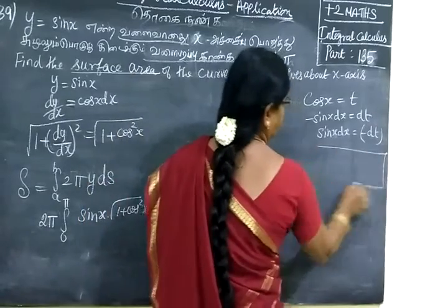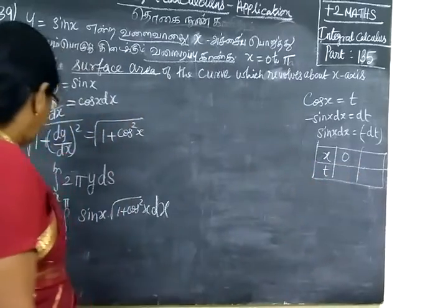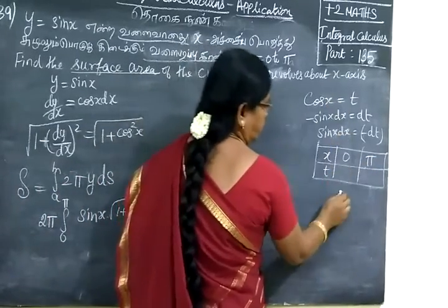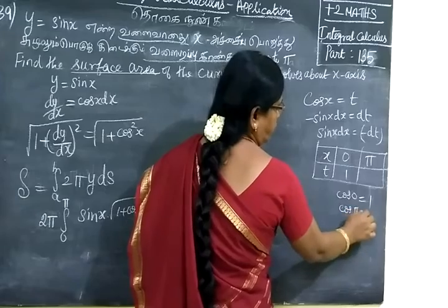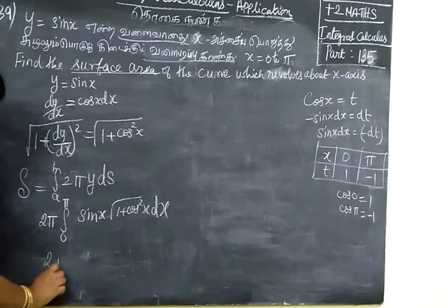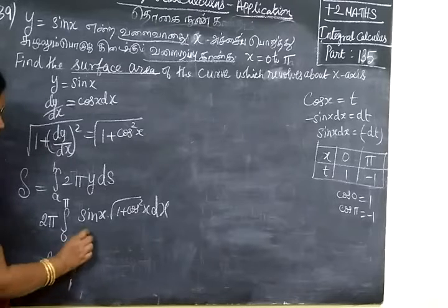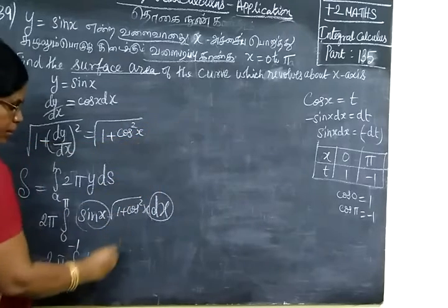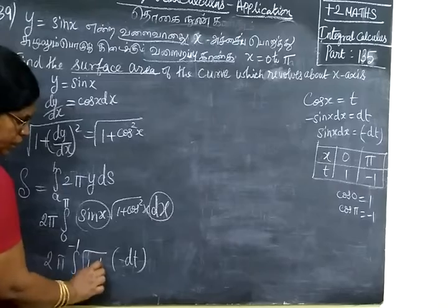The limits also change. For x, the limit is 0 to π. For x = 0, cos(0) = 1. For x = π, cos(π) = minus 1. So this equals 2π with limits 1 to minus 1. For sin(x) dx we substitute minus dt, and we get minus dt times root of 1 plus t².